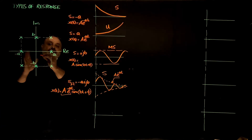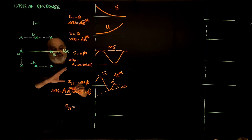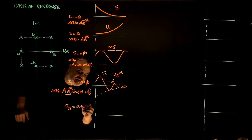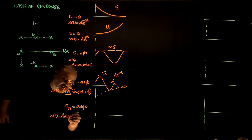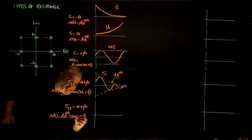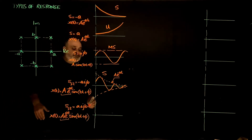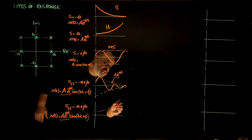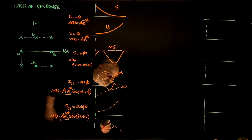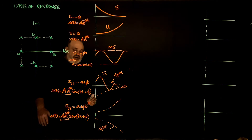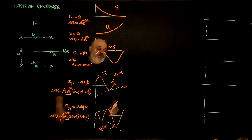The other possibility is in the right half plane, when the roots have a positive real component: a plus or minus j·b. Then x(t) is going to be some amplitude e to the positive a·t times sine of b·t plus phase. This amplitude is actually growing exponentially, so I have an envelope that grows exponentially, described by a·e to the power a·t, and the sine wave will oscillate within this growing envelope.